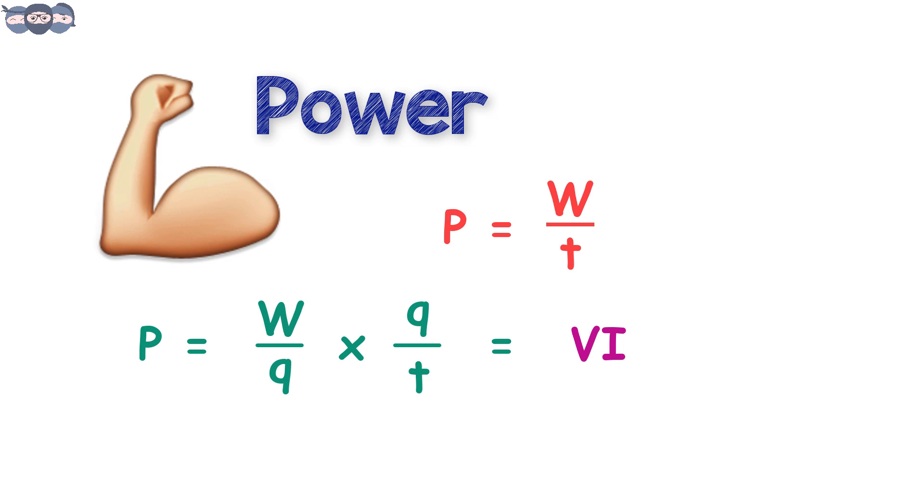Rearranging the terms, we get the equation for power as the product of voltage and current. The unit of power is watts.